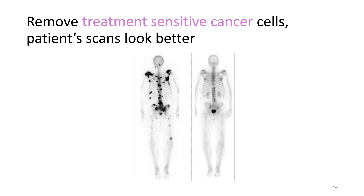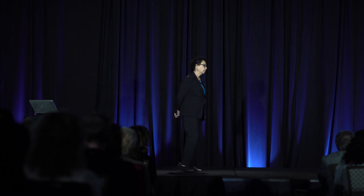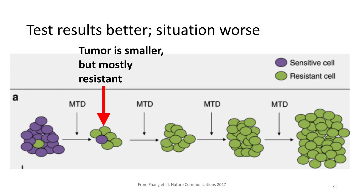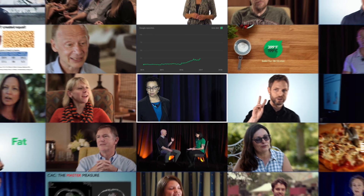But look at this: the patient's scan looks a whole lot better. On the right, the tumors are small, disappeared. Everybody's happy, right? What you've done is photoshopped the situation. The test results look better, but the patient is worse off. On the left side, you see you started with a big mass of purple cells. You end up with no purple cells after several rounds of maximum tolerated dose treatment, and you've ended up with a tumor that's bigger in spite of all of this treatment.